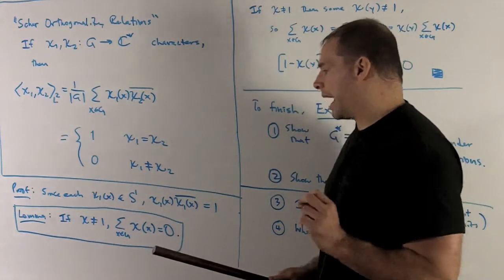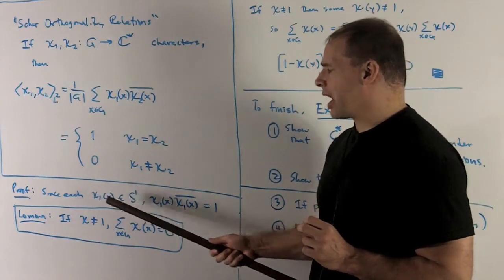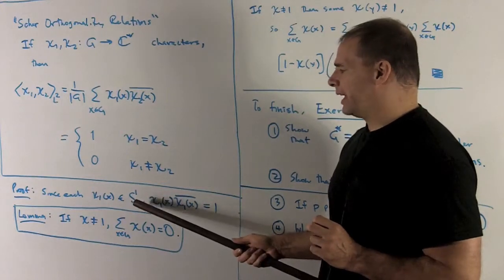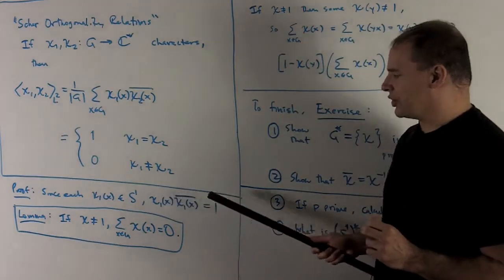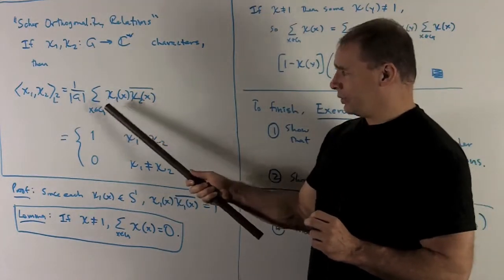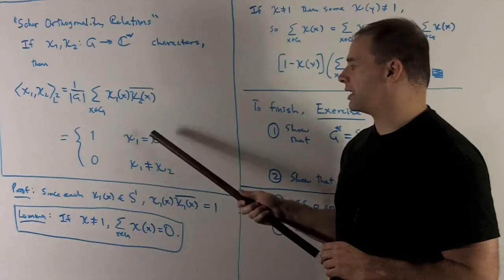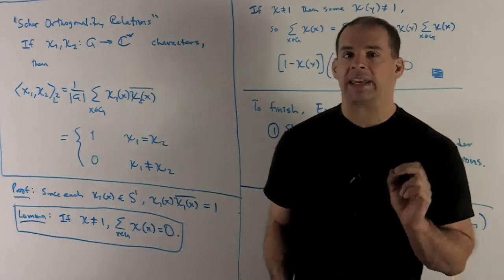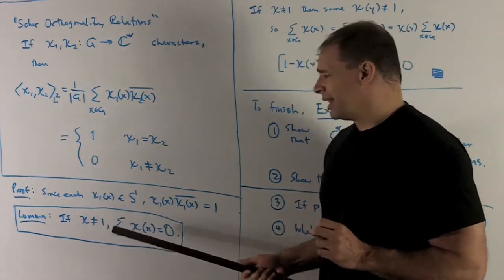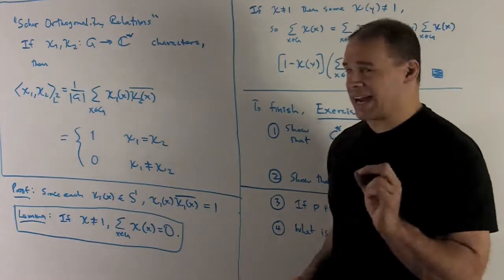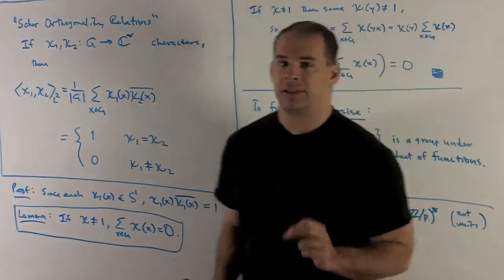Let's see how we get this. In the case where the characters are equal, note that if I apply my character to any point in the group, we get something in the circle, so it has length one. If I multiply it by its conjugate, I get one. I'm going to sum that up order-G times, and we just wind up with order-G over order-G, which gives me one. So that takes care of the first case.